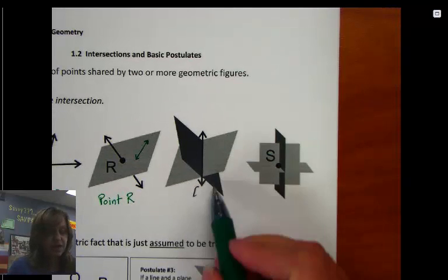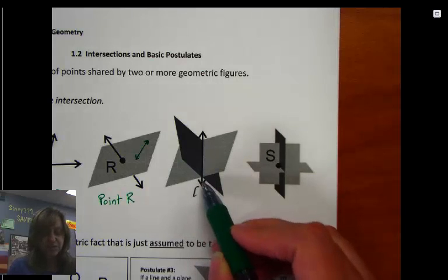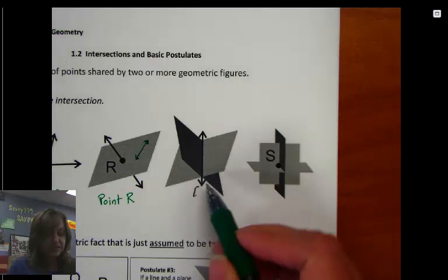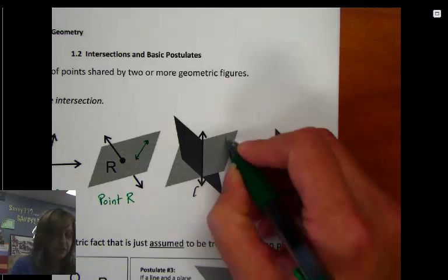Here's an example of two planes. Now, this line's drawn in because that's the intersection, but these two planes cross through each other, and they share some points. For example, this point, let me name it Q.